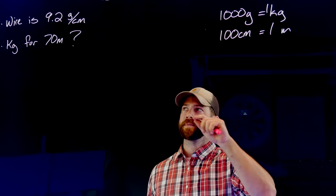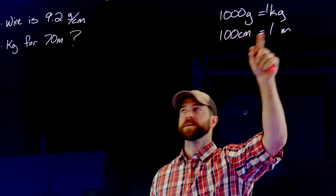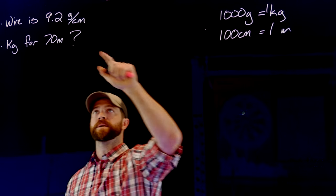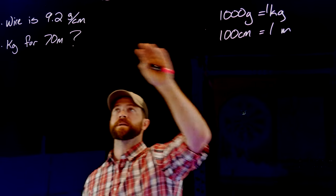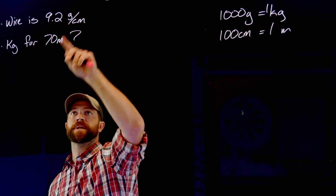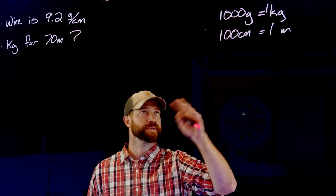The two pieces of information we need to convert here are from grams to kilograms. So 1000 grams is one kilogram that will get us from grams to kilograms. And then 100 centimeters per meter. So we have this rate in centimeters and the information in meters. So those are the connections.